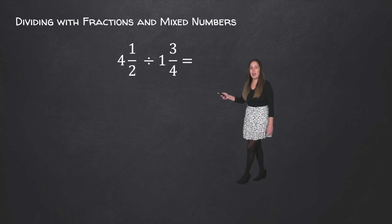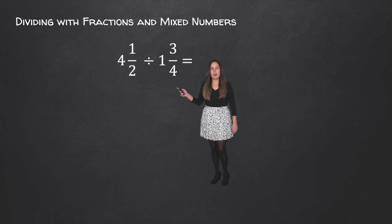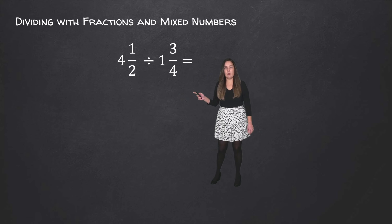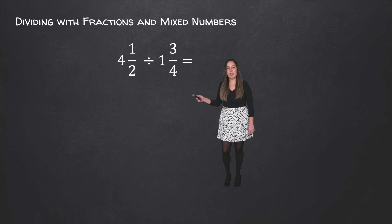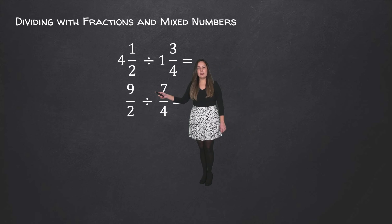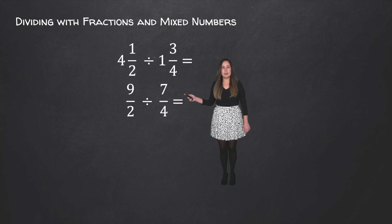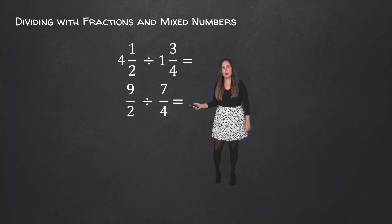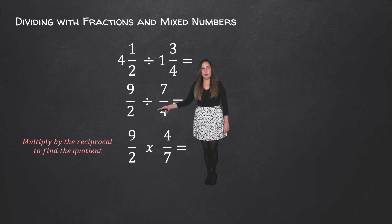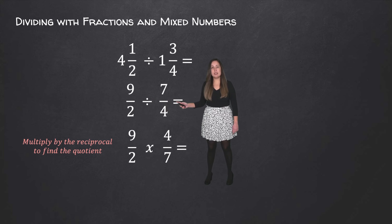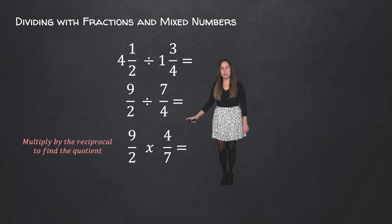So here we have our final example, where we have 4 and a half divided by 1 and 3 fourths. Since we have two mixed numbers, we have to rewrite them both as improper fractions. So 4 and a half is the same thing as 9 over 2, and 1 and 3 fourths is the same thing as 7 fourths. Then we can go ahead and divide — we're going to keep the 9 over 2 and multiply it by the reciprocal of 7 over 4, which is 4 over 7.